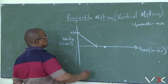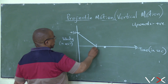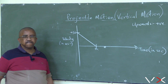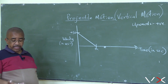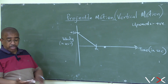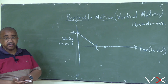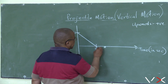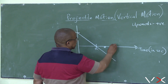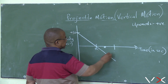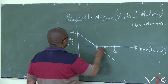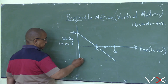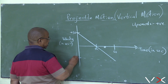This object is going to reach the highest point at 3 seconds. If you take another 3 seconds, that's 6 seconds total. If you take another 3 seconds, you get minus 3, meaning the velocity is now minus 30 on the way down.